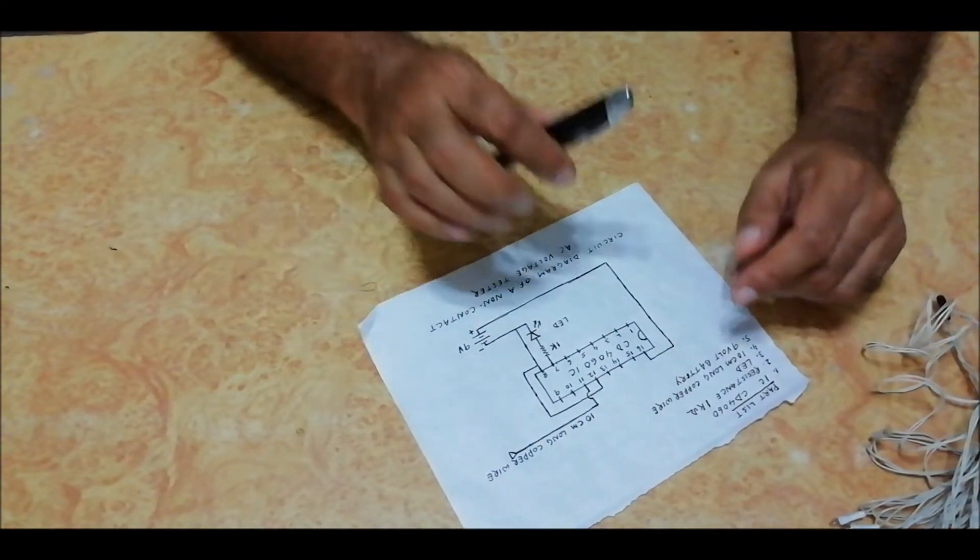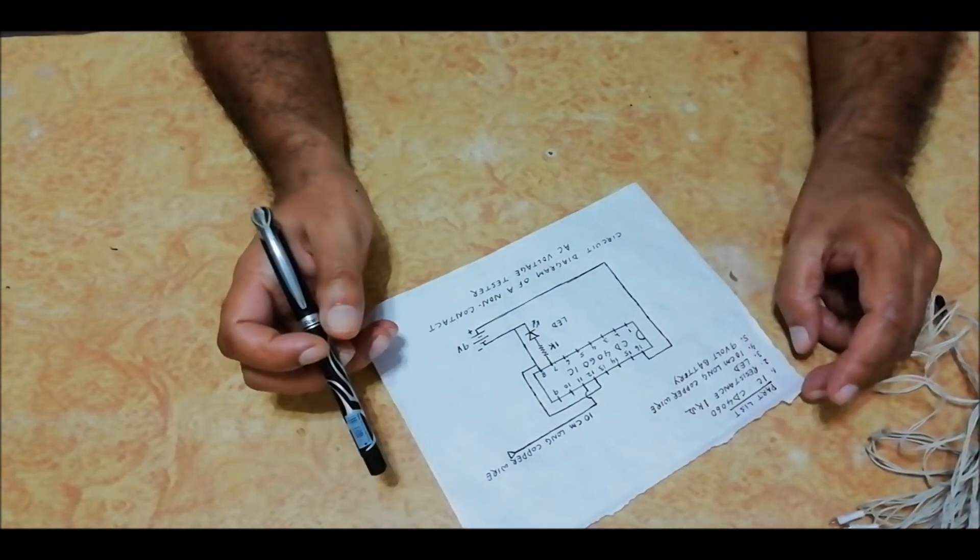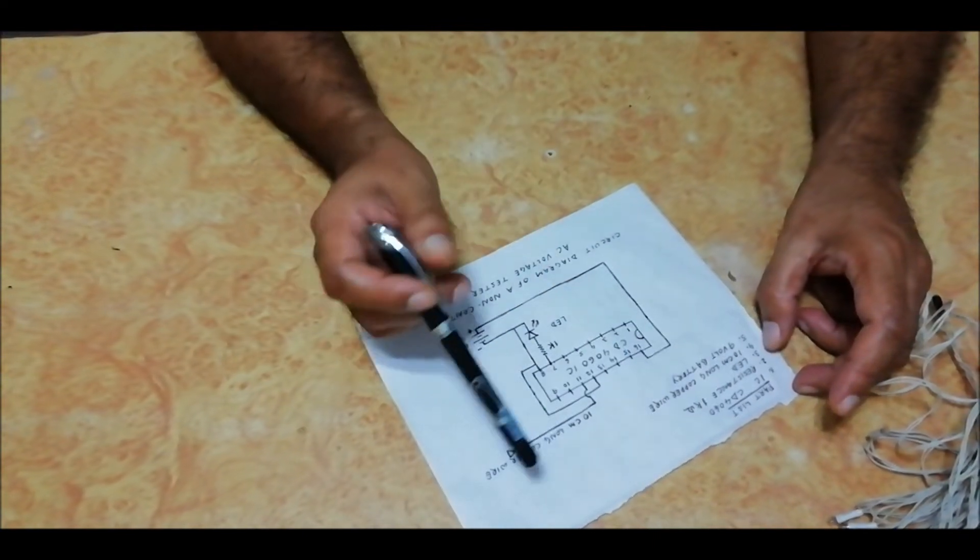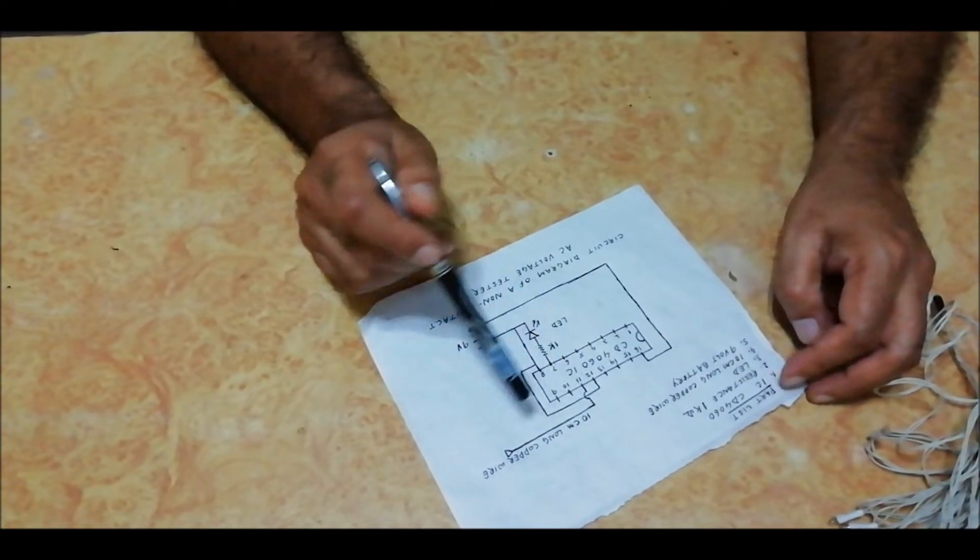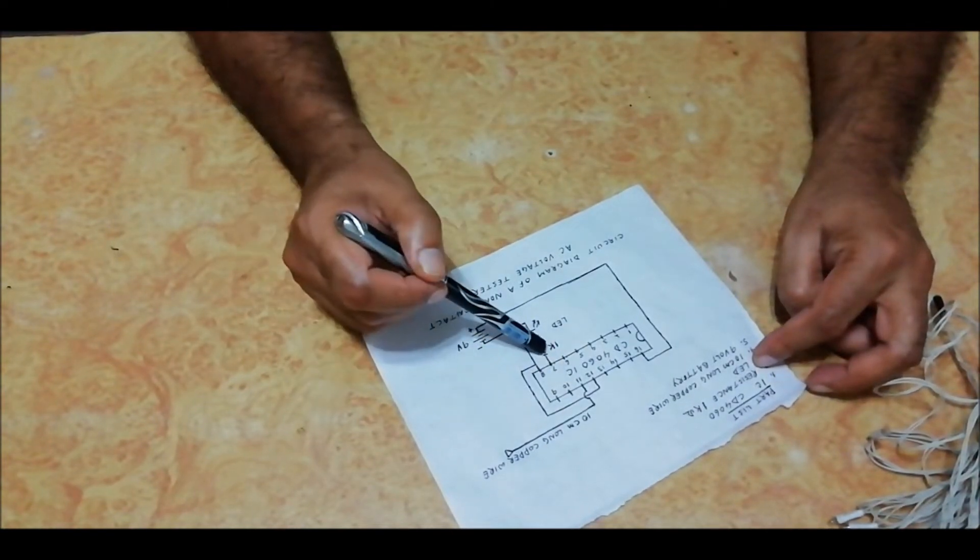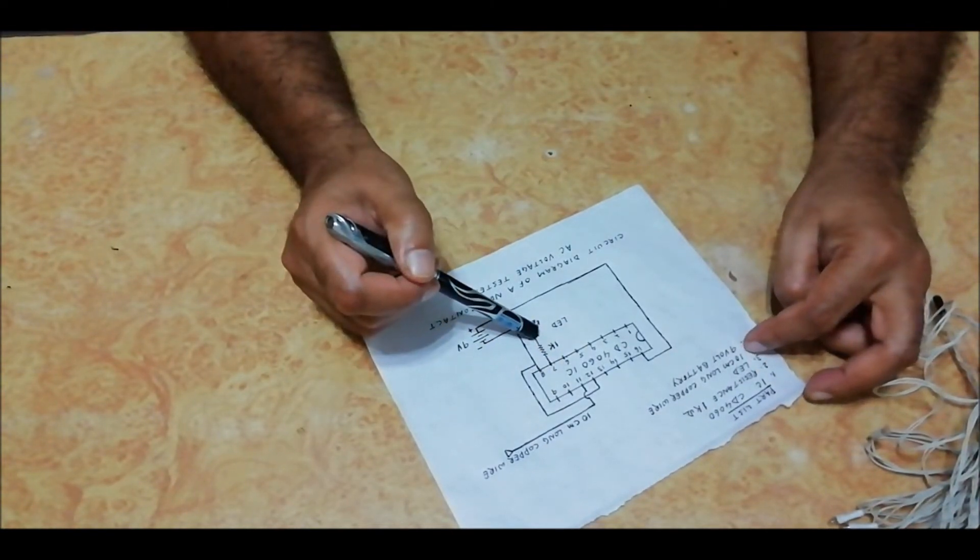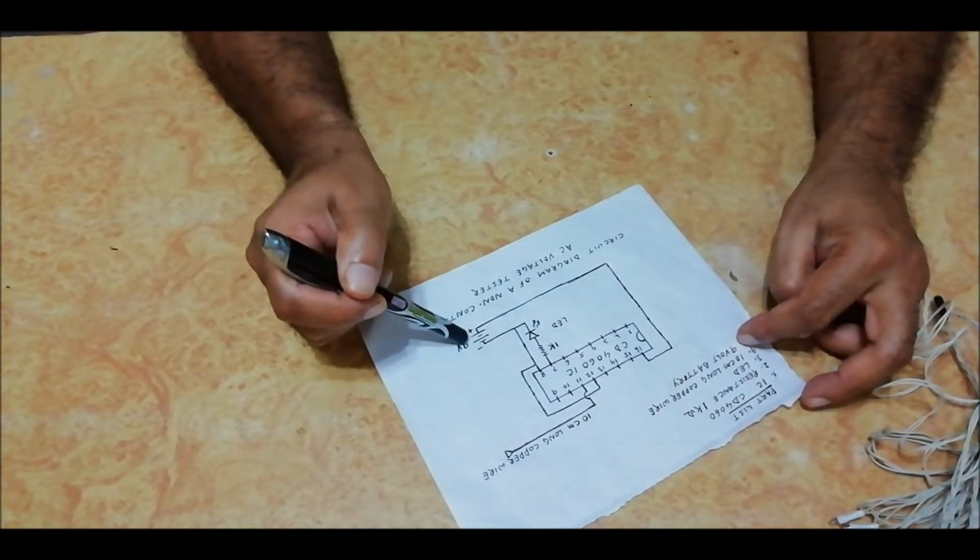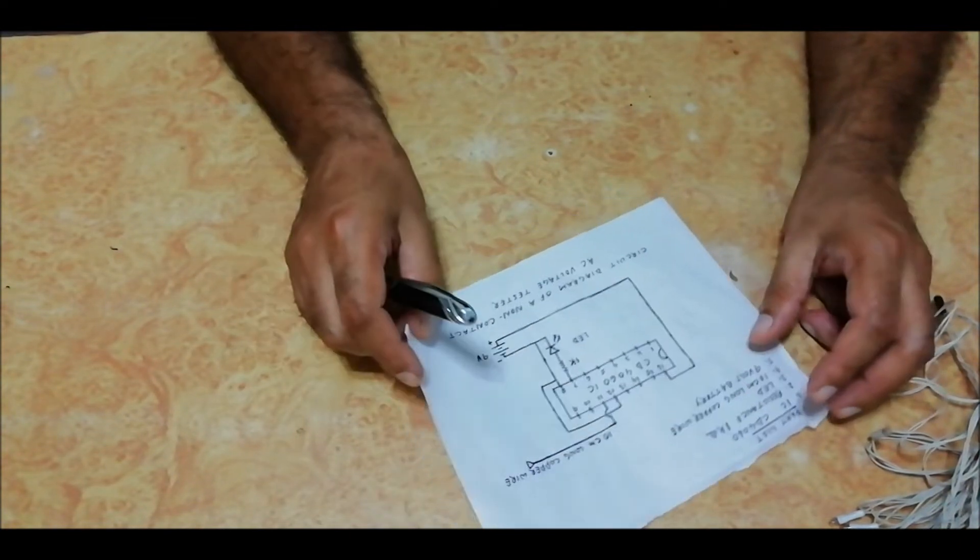See, here is the circuit diagram of the non-contact AC voltage tester. It requires only five components: one IC CD4060, one resistor one kilo-ohm, one LED, a 10 centimeter long copper wire, and a 9 volt battery.